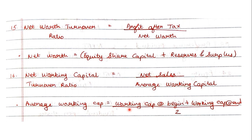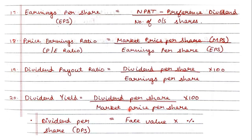These are not that important ratios but they are part of the syllabus, so just go through them once. Next, earning per share is the most important ratio: net profit after tax minus preference dividend upon number of outstanding equity shares. Next is the price-earnings ratio: market price of the share upon earnings per share. Dividend payout is dividend per share upon earnings per share into 100. Dividend yield is dividend per share upon market price per share into 100. Note that dividend per share given in percentage form will always be on face value.